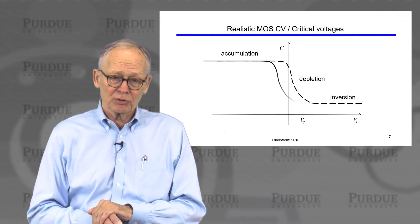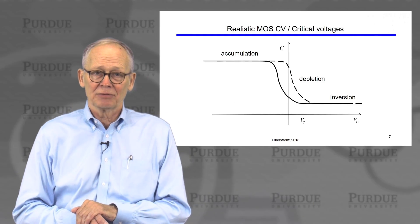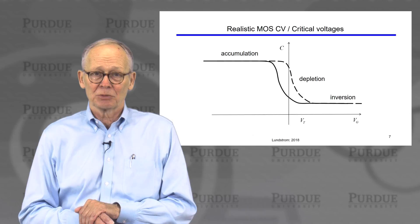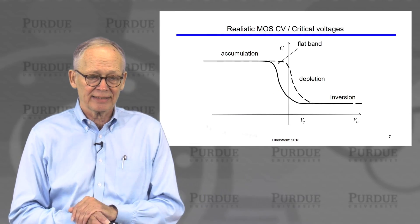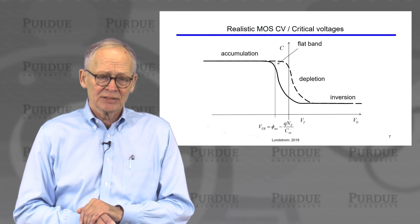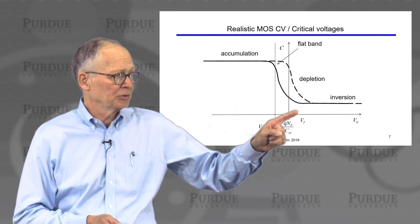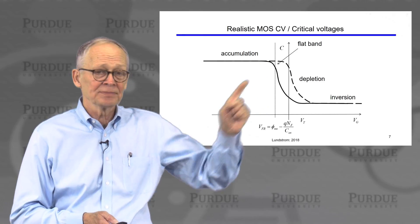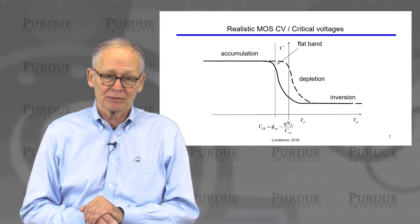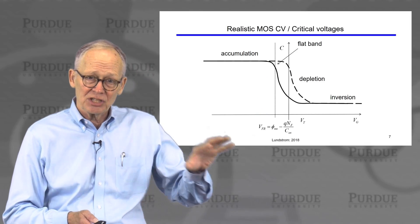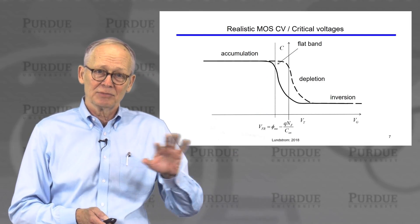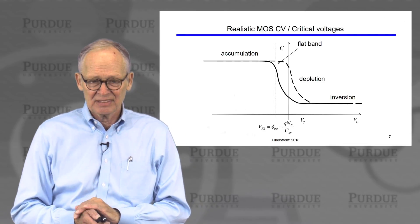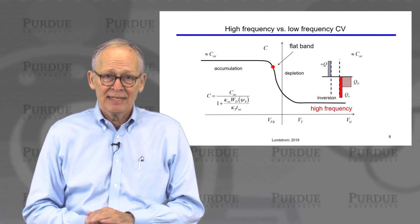In a realistic structure, we have to account for the metal-semiconductor work function difference and any charges at the interface. So the flat band voltage will typically have a negative value in a p-type semiconductor, and we'll simply shift the whole CV curve — translate it to the left.